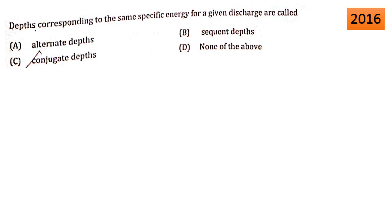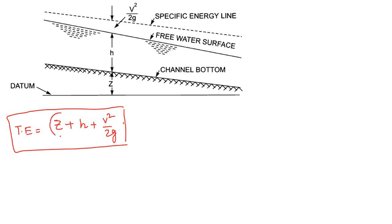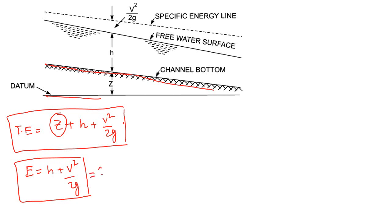Next question: depths corresponding to same specific energy for a given discharge are called? Specific energy is discussed here. Total energy is the sum of datum head, pressure head, and velocity head (v squared by 2g). When we take the channel bottom as the datum instead of a fixed reference, the energy becomes H plus v squared by 2G — this is known as specific energy.